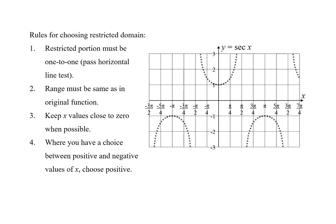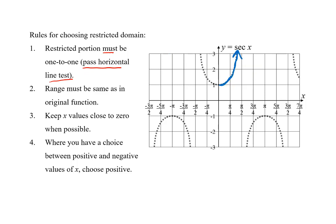Next, we look at secant. It is common for students to use one branch of the secant function as the restricted domain, but that does not work. That branch does not pass the horizontal line test — it is not one-to-one. Instead, we use only half the branch. To follow rules 3 and 4, we use the branch that includes x equals zero and choose the side where x is positive. We also need the range to be the same as the original function, which has branches that go down as well as up. We take the downward one closest to x equals zero on the positive side. This gives a restricted domain from zero to pi over 2 and from pi over 2 to pi.